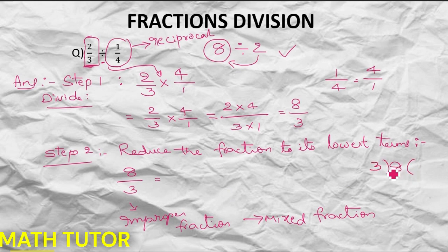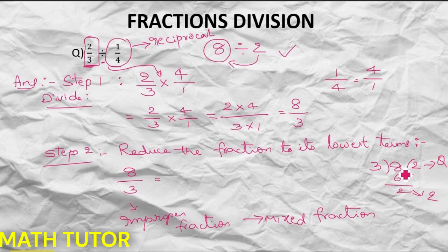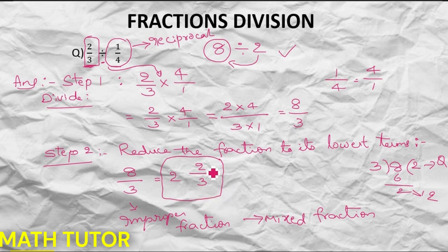To convert 8 by 3 to a mixed fraction: 8 divided by 3 means we find how many 3s are in 8. It comes to 2 with a remainder of 2 by 3. So the answer for how many 1 by 4s are in 2 by 3 is 2 and 2 by 3.